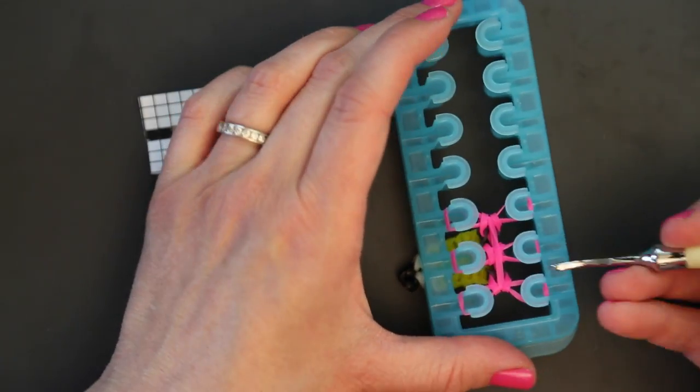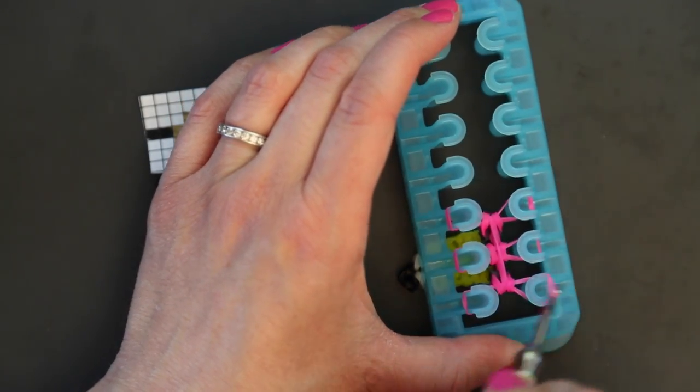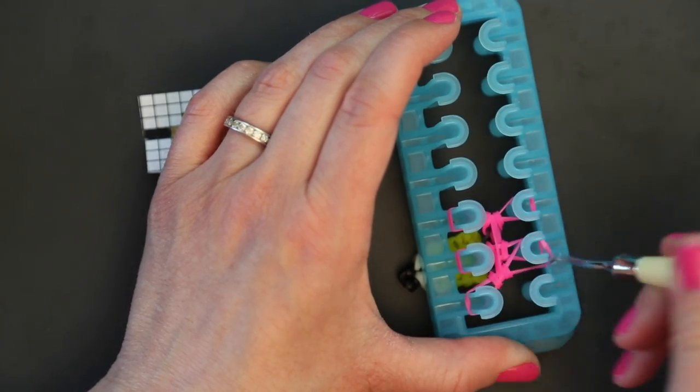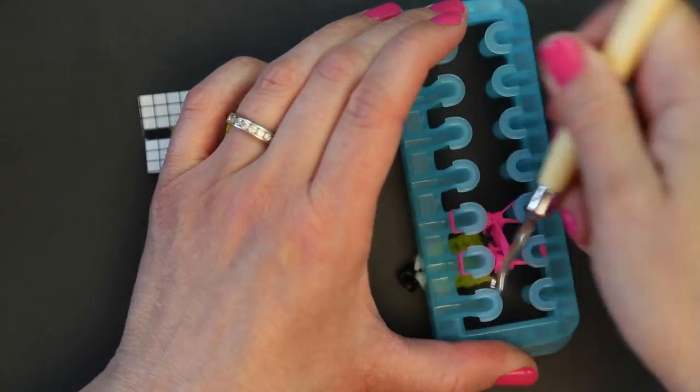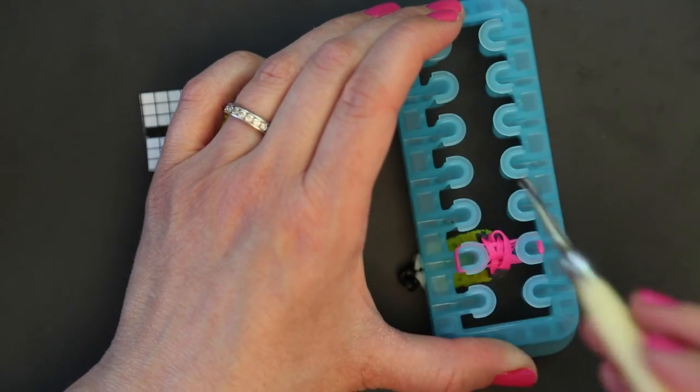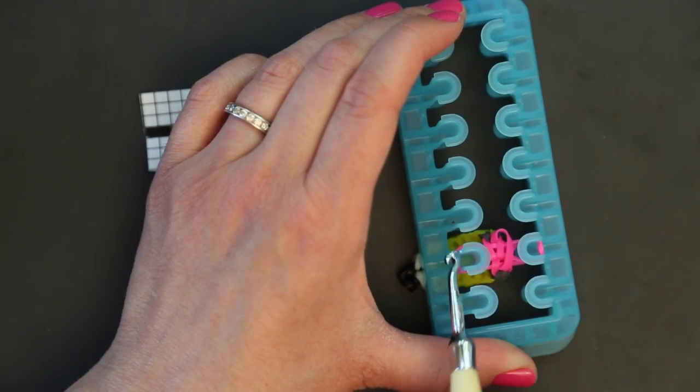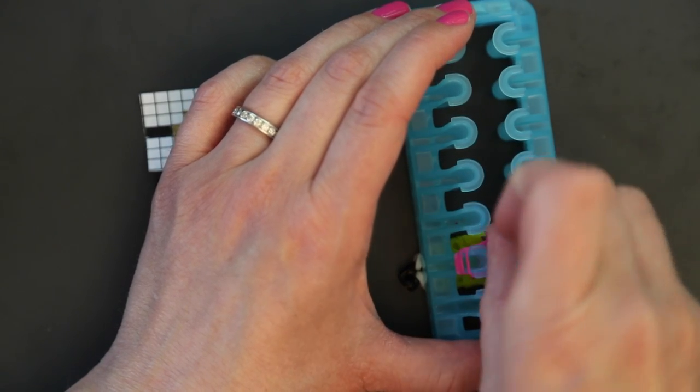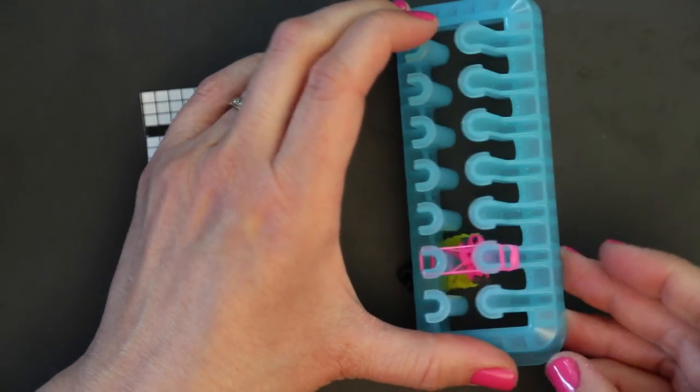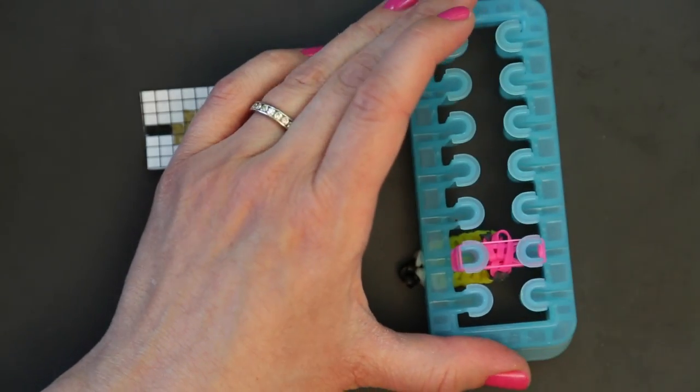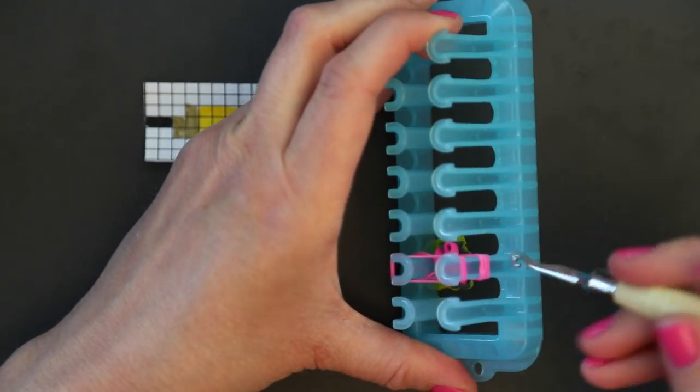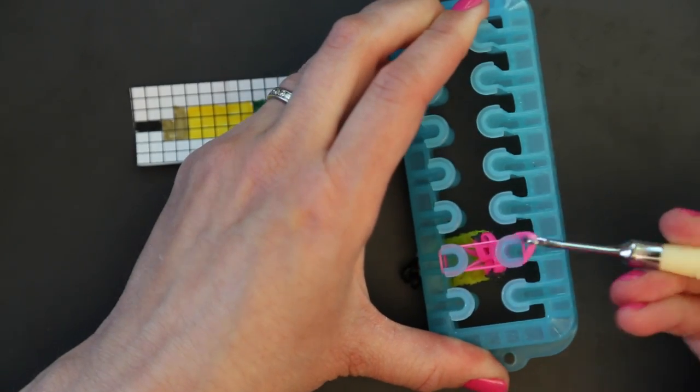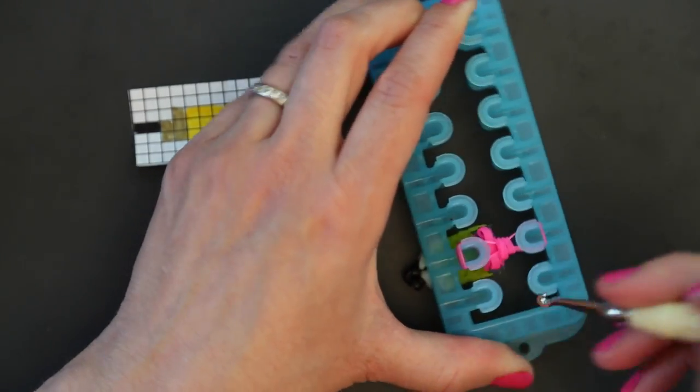So now we have our entire pencil set up and we need just the one band that's going to hold it all together. To make that, move your loom bands from the outside to the center peg on both sides. Slide those down. And then add one more loom band. Like that.